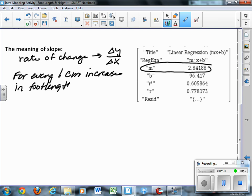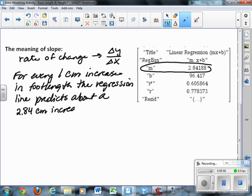for every one centimeter increase in foot length, the regression line, because that's what we're using to predict, the regression line predicts about a 2.84 centimeter increase in height. So for every one unit change in the x direction, the slope tells us what to expect as a change in the y direction.